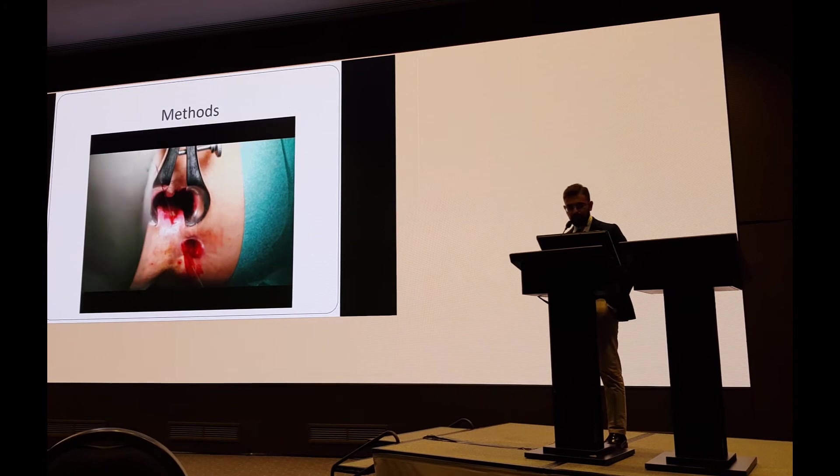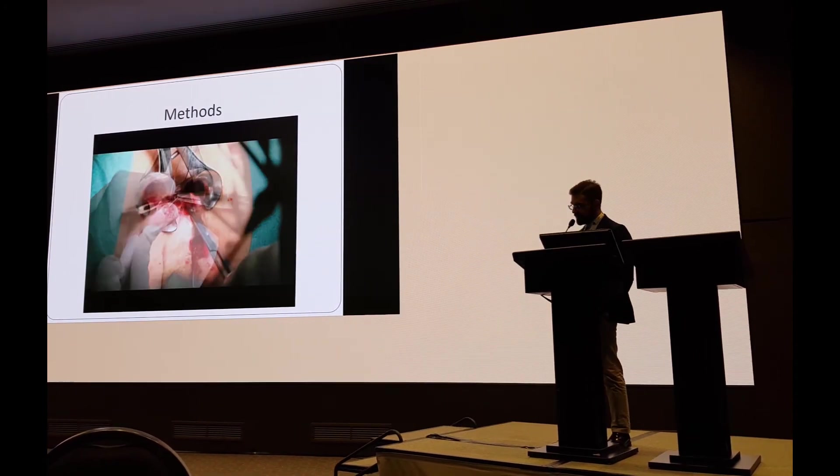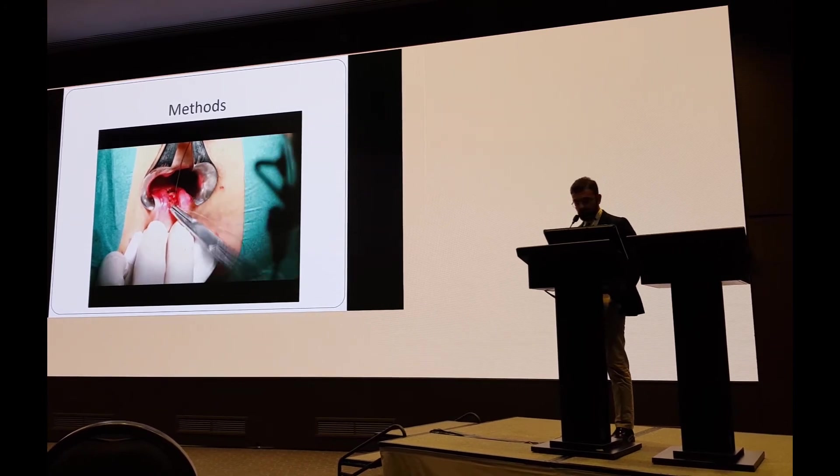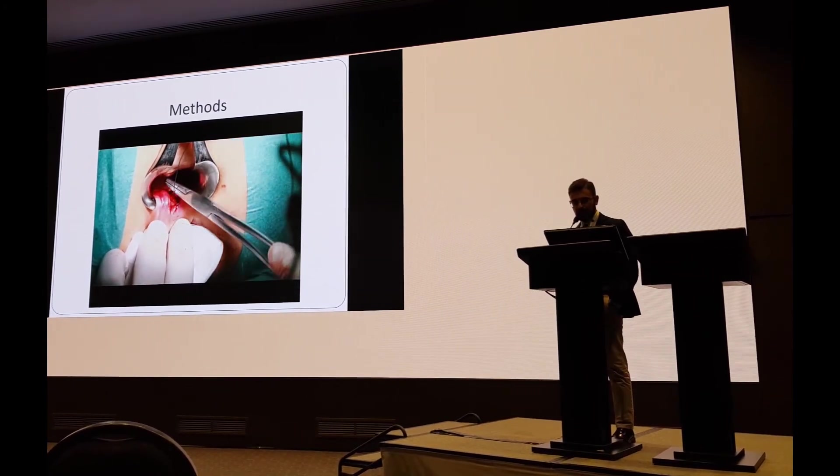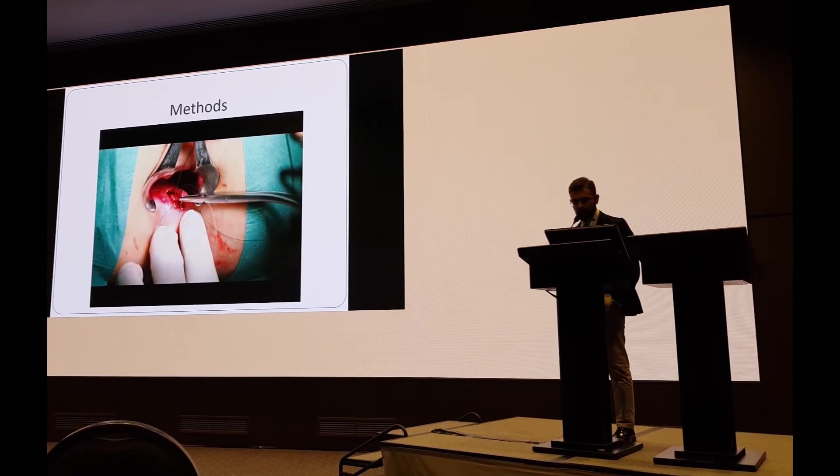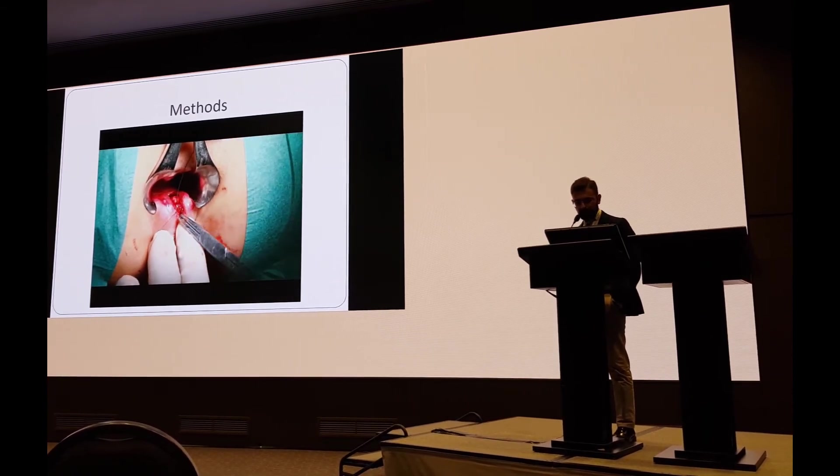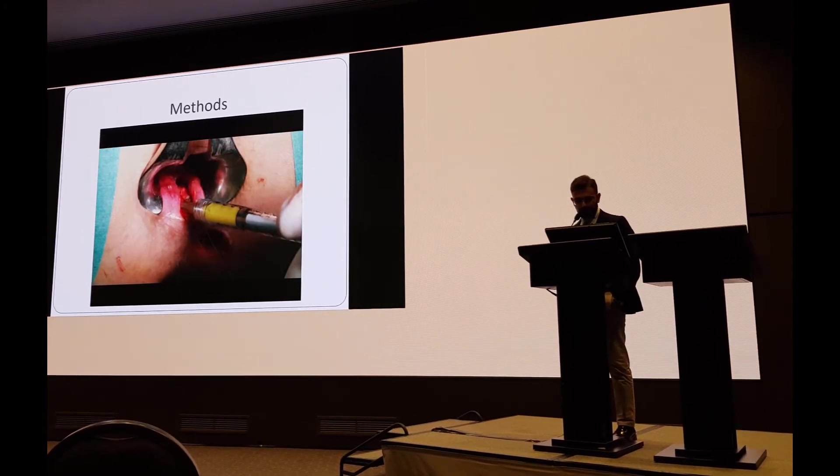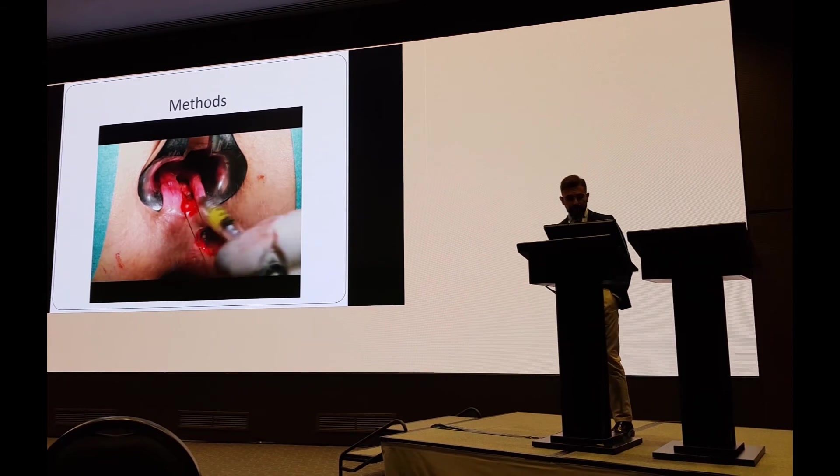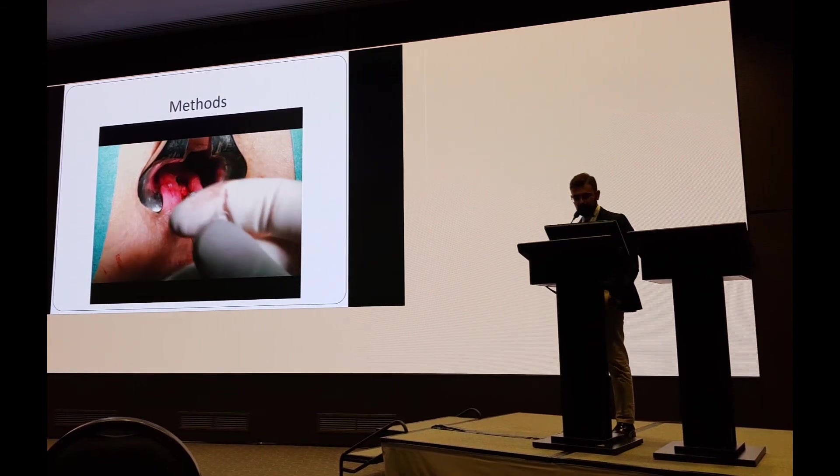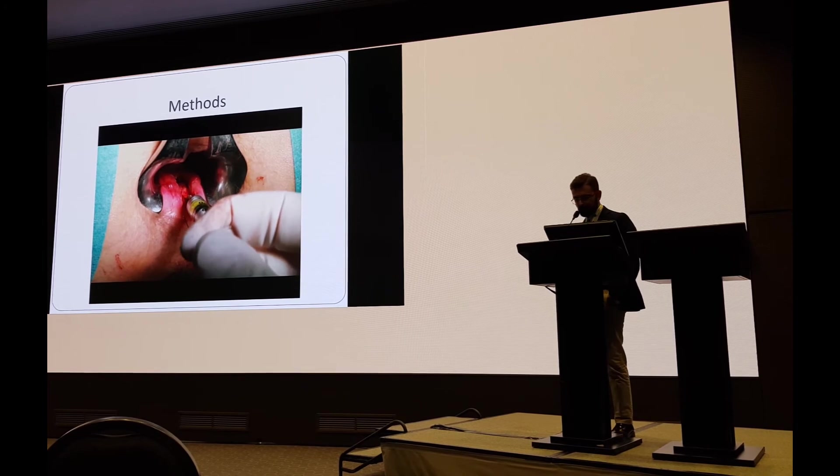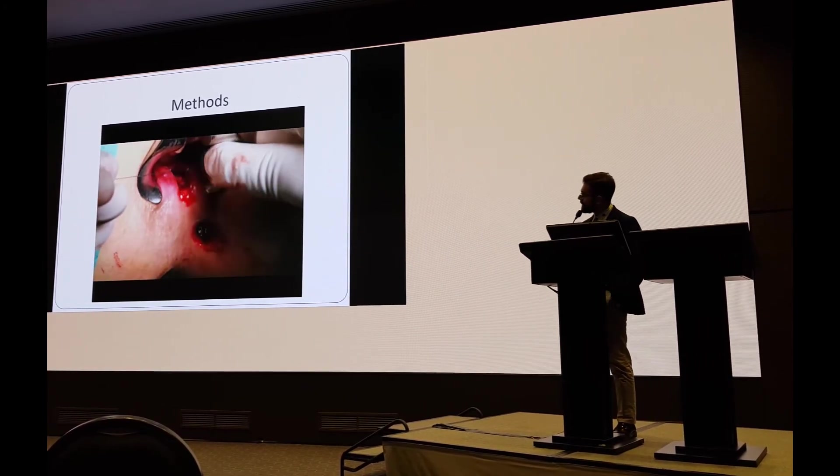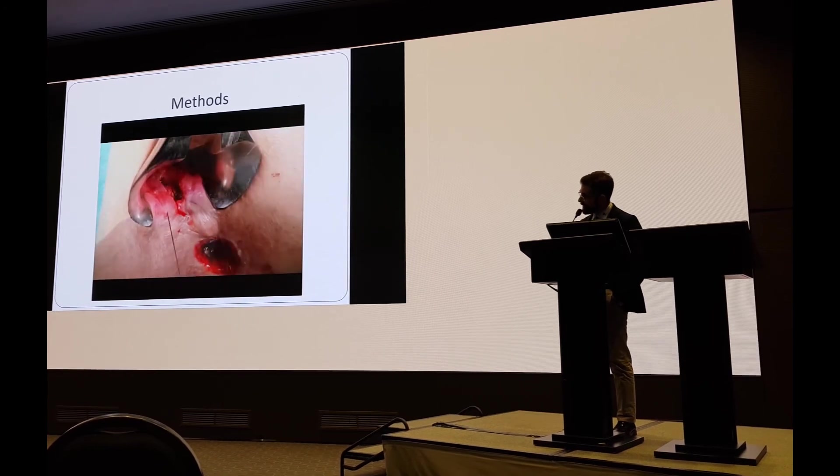Here is the curettage of the fistula tract. We prepare the internal orifice. We put a 2-0 PDS stitch on the internal opening at the muscular layer, inject the muscular layer with the final product, and then we close the muscular layer.